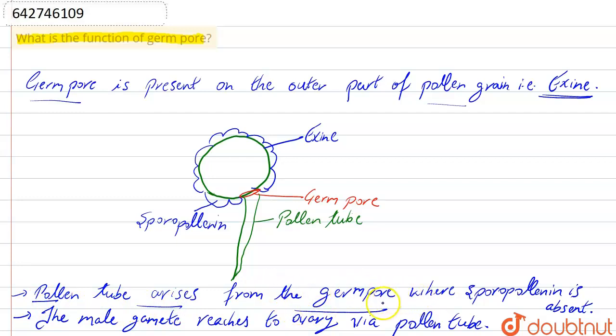So the germ pore gave rise to the pollen tube where the sporopolynin is absent, and the male gametes reaches to the ovary by pollen tube.